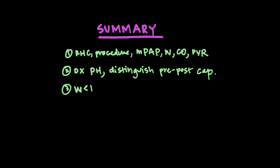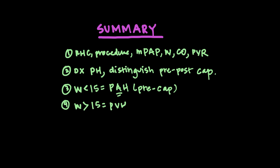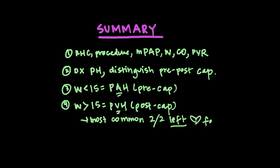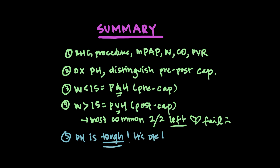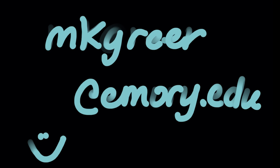In summary, a right heart cath is performed to diagnose pulmonary hypertension by measuring the mean pulmonary artery pressure, wedge pressure, cardiac output, and calculating PVR. These numbers diagnose pulmonary hypertension and distinguish precapillary from postcapillary disease. The most common kind of postcapillary pulmonary hypertension is from left-sided heart failure. Pulmonary hypertension is a tough concept and disease — it's completely okay if you don't understand it yet. Thank you for listening; if you have any questions, feel free to email me at mkgreer@emory.edu. Happy studying!